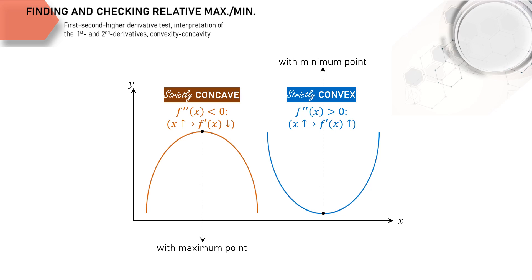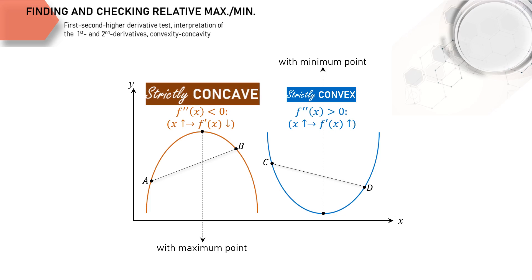How do we check concavity and convexity geometrically? We need to create one or more line segments connecting two points on the function's curve. For instance, we can have a line segment connecting points a and b here, or points c and d here. Then we compare the height of the line segment with the function's curve — the arc segment. If, other than the two endpoint positions on the curve, the height is always lower — like line segment a and b — then we have a strictly concave curve. On the other hand, if the height of the line segment is higher, like cd, then the curve is strictly convex.